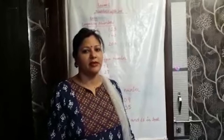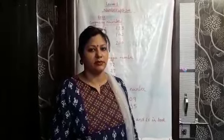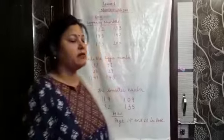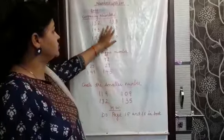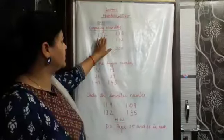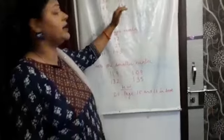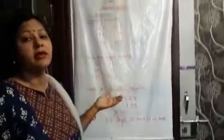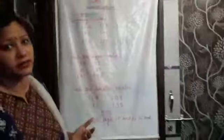Hello children, today we will learn about comparing numbers. Have a look at the board. Here, two numbers are written: 132 and 133. Comparing numbers means you have to see which number is bigger and which number is smaller.